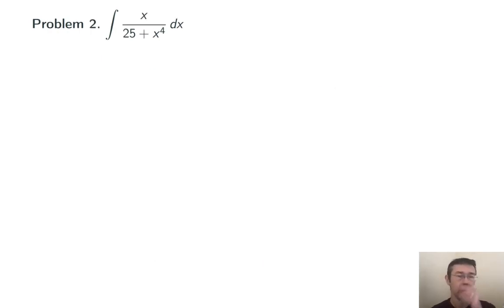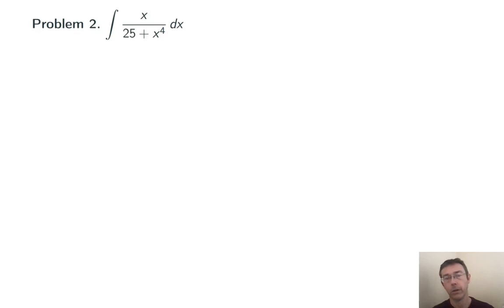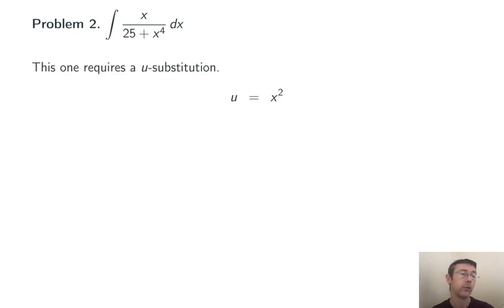Problem two: integral of x over 25 plus x to the fourth dx. This looks a little different than either of our formulas — in particular, notice that there's an x to the fourth in the denominator, not an x squared. If that were an x squared and there were no x in the numerator, this would be a tangent formula. So the substitution u equals x squared is going to help us out.